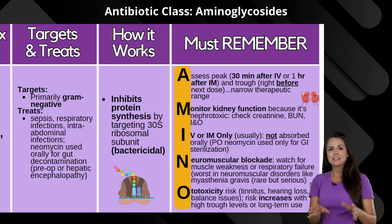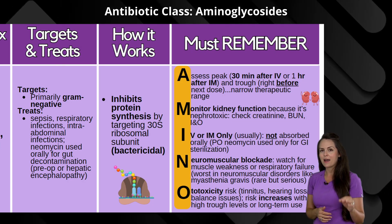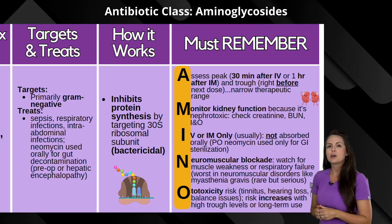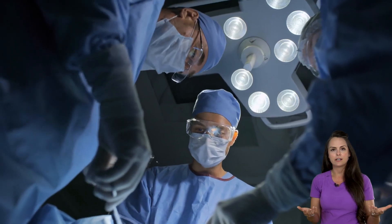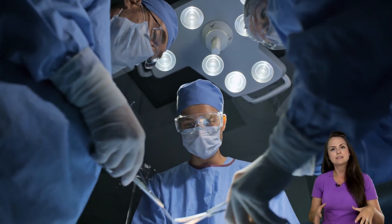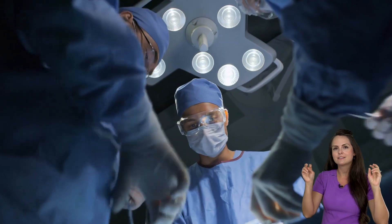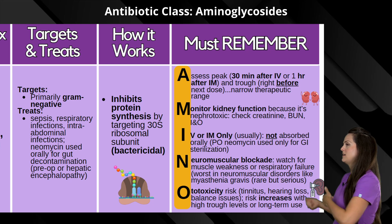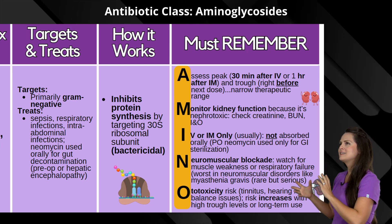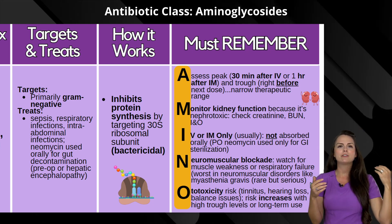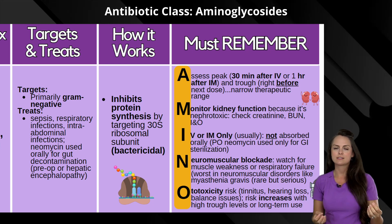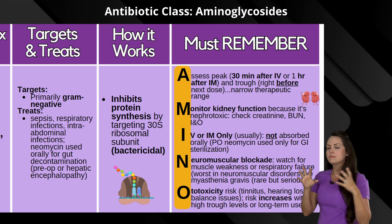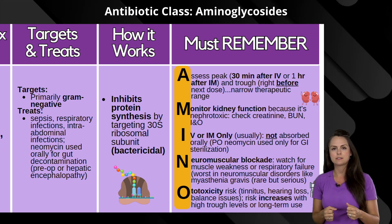One medication in this class that is given orally is neomycin, and the reason for this is because it's for gut decontamination. So if a patient is having surgery on their abdomen, they may give them this because it can help do some GI sterilization to prevent infection afterwards. Or it can be used in cases of hepatic encephalopathy — where your liver is not working and you have a buildup of toxins, one of which is ammonia — and this medication can help decrease that substance in the gut.